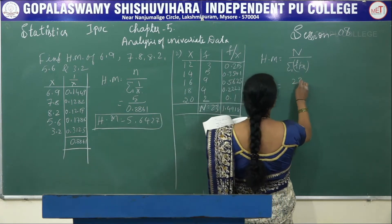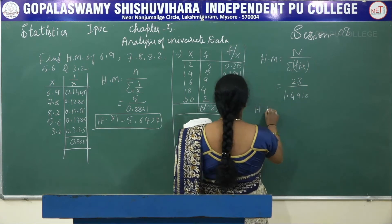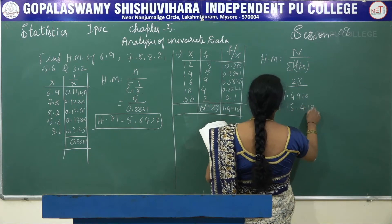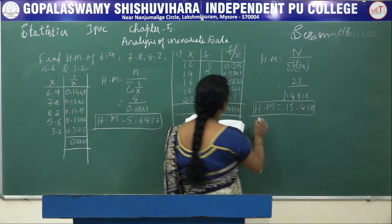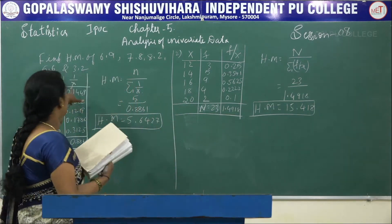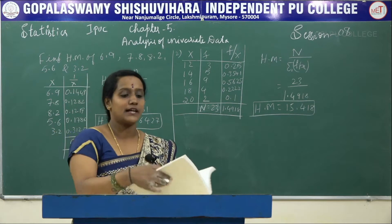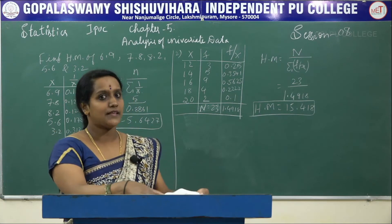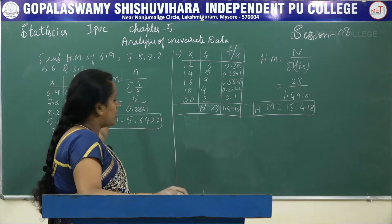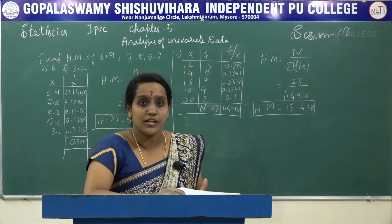Here N is equal to 23. So HM is 23 divided by 1.4918, which gives HM equal to 15.418. In the exam, you will get this type of problem for two marks — for direct data, we find HM.